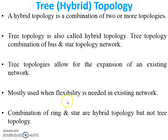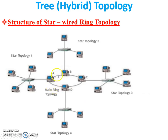Tree topology is mostly used when flexibility is needed in an existing network. Note that a combination of ring and star is a hybrid topology, but not a tree topology — because tree topology is the combination of bus and star. For example, if the main segment is ring topology connected with star topologies, that structure is called star-wired ring topology. It is also a hybrid topology, but it is not a tree topology — the main topology there is ring topology.